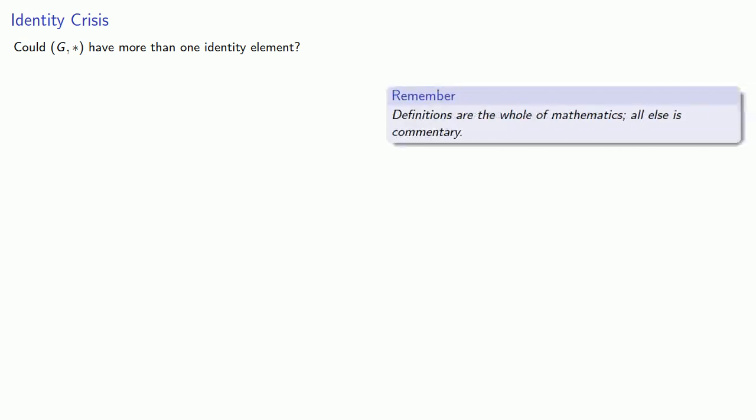Given an algebraic structure with an identity, one question we could ask is: could G-star have more than one identity element? To answer this question, remember that definitions are the whole of mathematics. An identity element is one that, if it operates on any element G, is going to give us G itself.